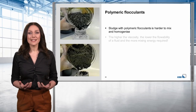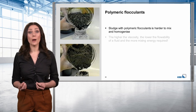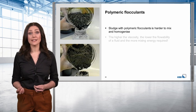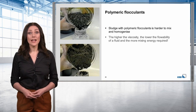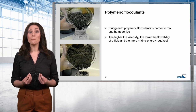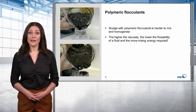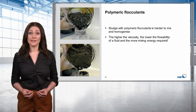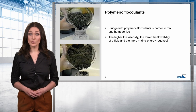When selecting a mixer, it has to be taken into account that sludge with polymeric flocculants is harder to mix and homogenize. This means the higher the viscosity, the lower the flowability of a fluid, and the more mixing energy required. For this reason, it is of major importance that you know the DS content, the thickening method, and whether polymeric flocculants are used.